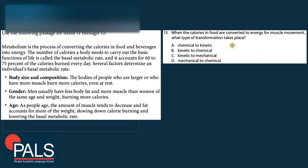Question 13: When calories in food are converted to energy for muscle movement, what type of energy transformation takes place? Energy in food is stored in chemical bonds — that is chemical energy. When released for muscle movement, 'movement' is a form of kinetic energy. Whenever you read 'kinetic,' it relates to motion or movement. The correct answer is chemical to kinetic energy.